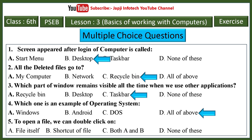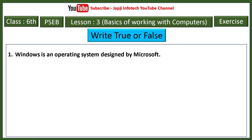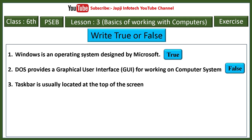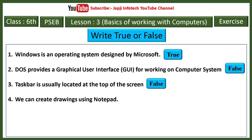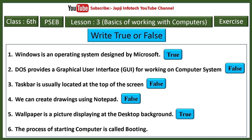True or false for lesson three. Windows is an operating system designed by Microsoft — true. DOS provides a graphical user interface — false. Taskbar is usually located at the top of the screen — false. We can create drawings using Notepad — false. Wallpaper is a picture displayed at the desktop background — true. The process of starting a computer is called booting — true.